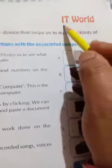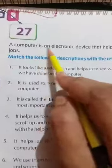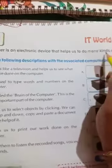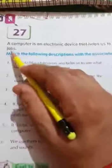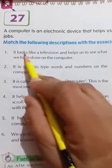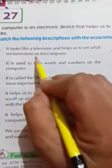Now come to the next chapter. Chapter 27, that is IT. Let's start. Computer is an electronic device that helps us to do many kinds of jobs. Match the following descriptions with the associated computer parts. Number 1. Look.